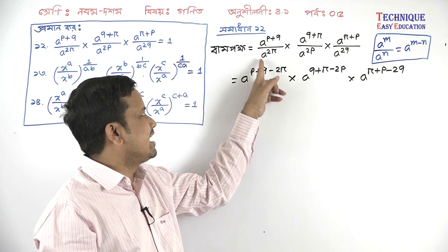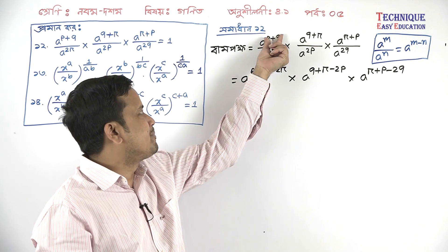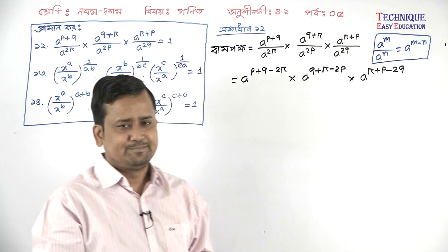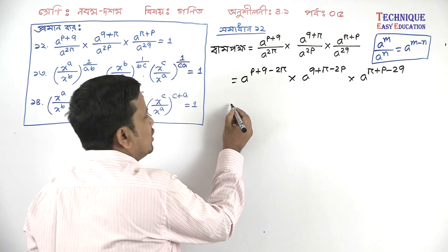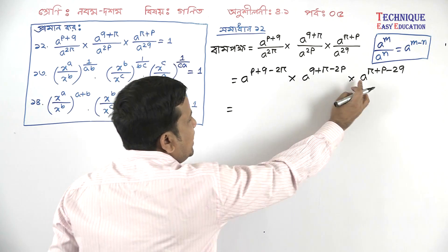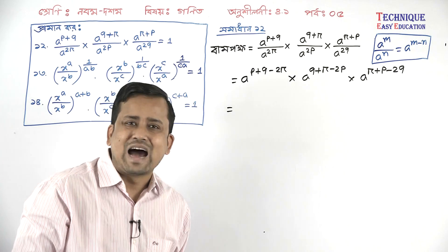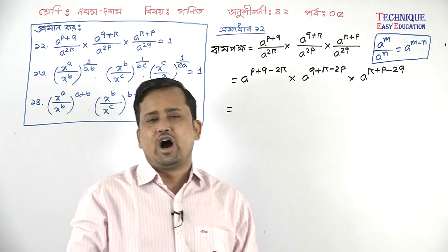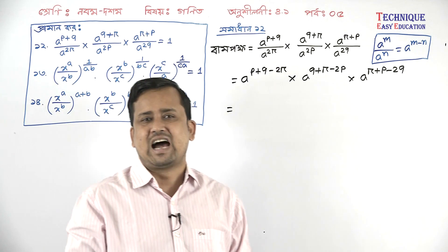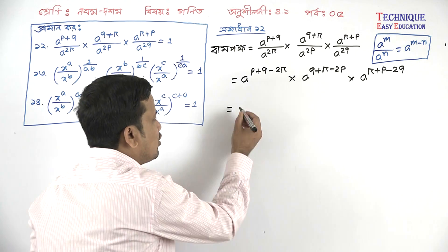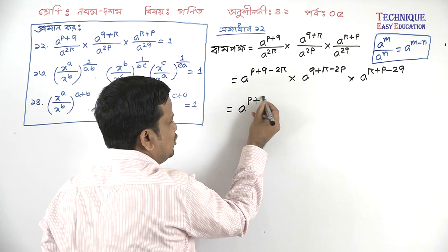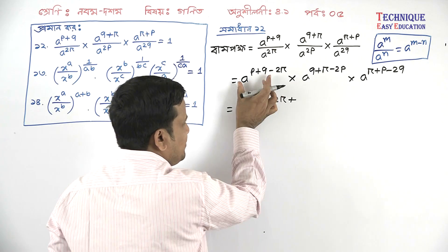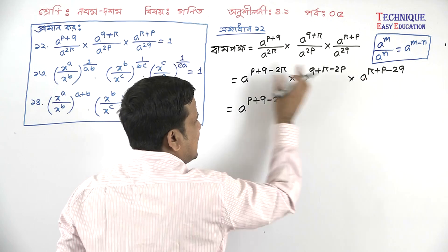And the base A is the same base A, so the combined exponent is P plus Q minus 2R. The base A is the base A throughout. We will work with base A — since the base A is the same base A, the exponent laws apply directly.